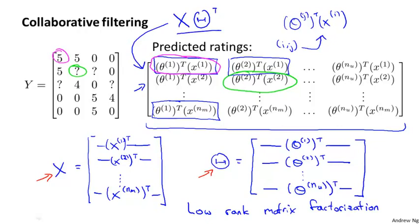And this term comes from the property that this matrix, x times theta transpose, has a mathematical property in linear algebra called that this is a low rank matrix. And so that's what gives rise to this name, low rank matrix factorization for these algorithms, because of this low rank property of this matrix x theta transpose. In case you don't know what low rank means, in case you don't know what a low rank matrix is, don't worry about it. You really don't need to know that in order to use this algorithm. But if you're an expert in linear algebra, that's what gives this algorithm this other name of low rank matrix factorization.